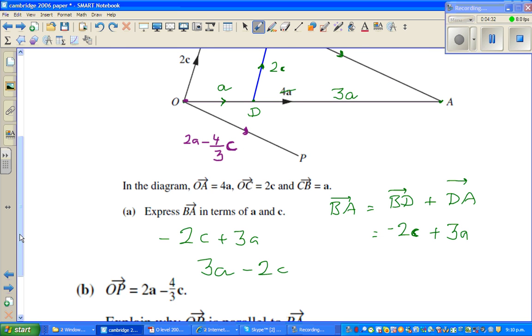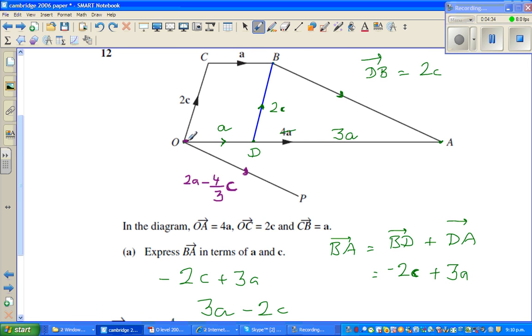So understanding it graphically, this means you have to go from here to here c. Then you have to go in the opposite direction of c, so that is 4/3 of c.